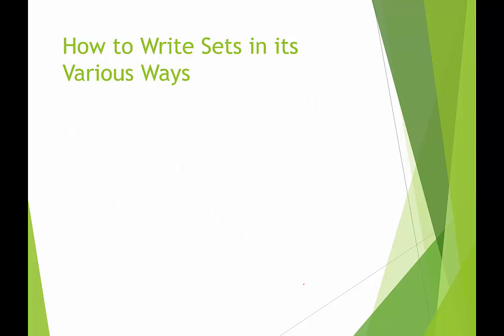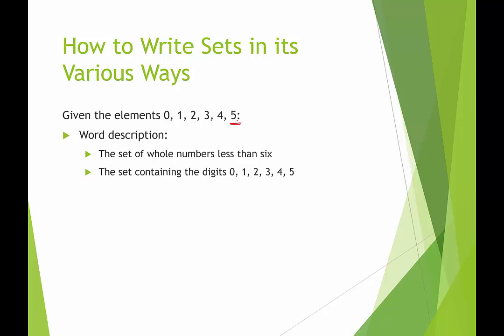Okay, so how to write sets in various ways. So if we're given zero, one, two, three, four, five, I notice that this is a finite set, it stops at five. If I wanted it to keep going then there would be a dot dot dot behind it. The word description, one possible word description is this is the set of whole numbers less than six. Or I could say the set containing the digits zero, one, two, three, four, five.